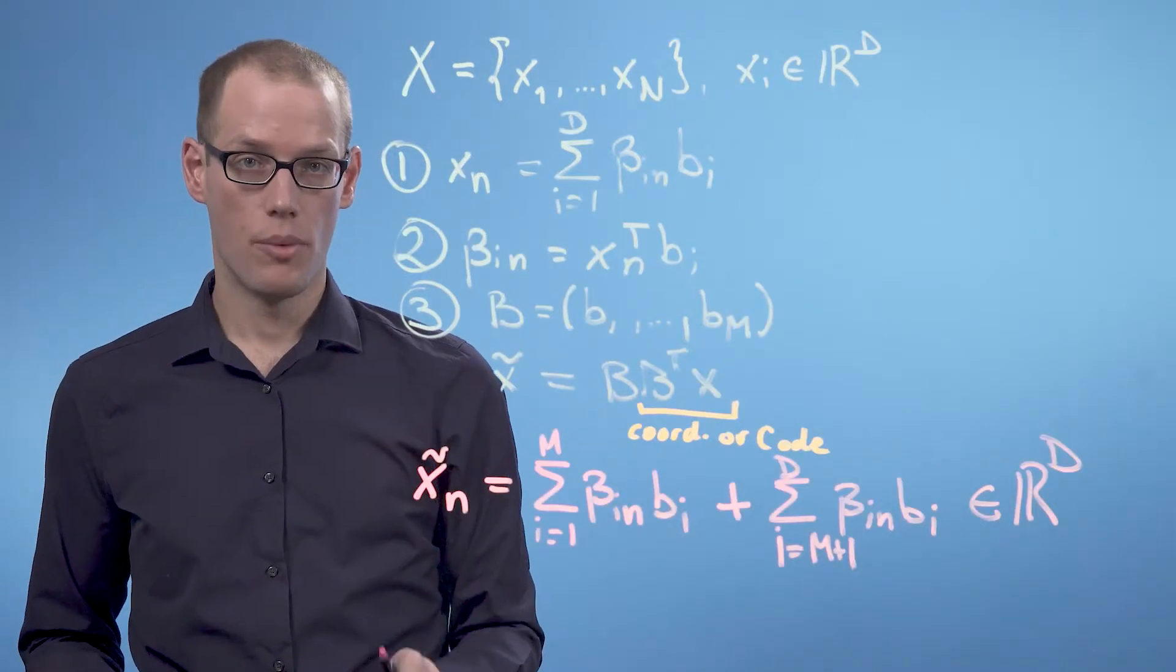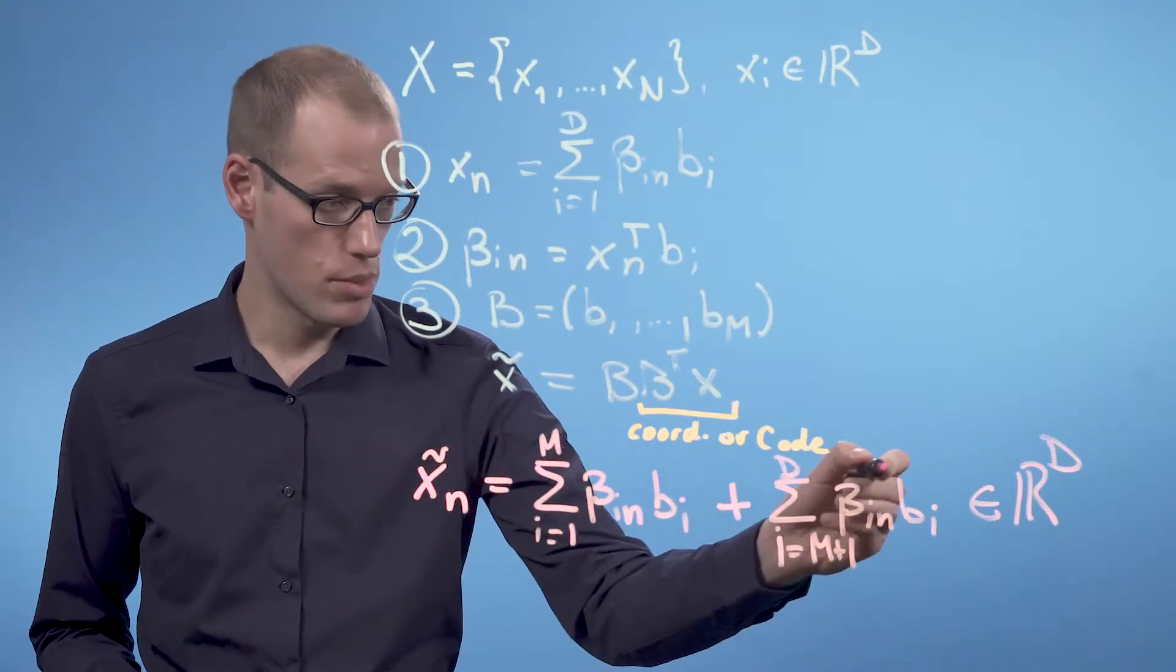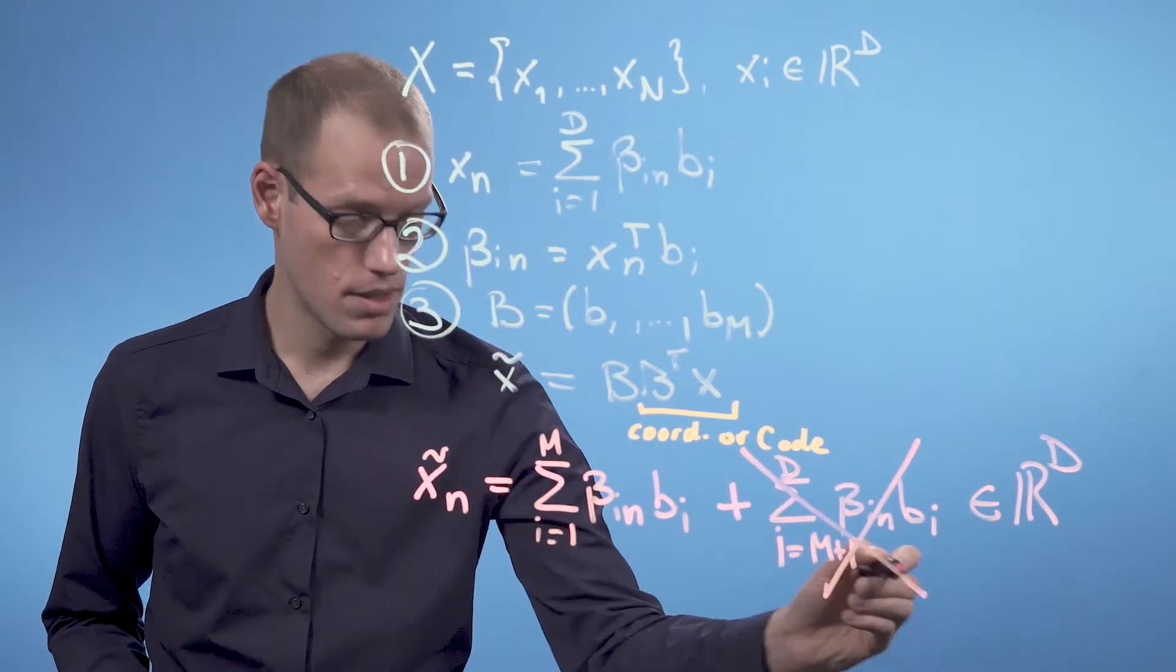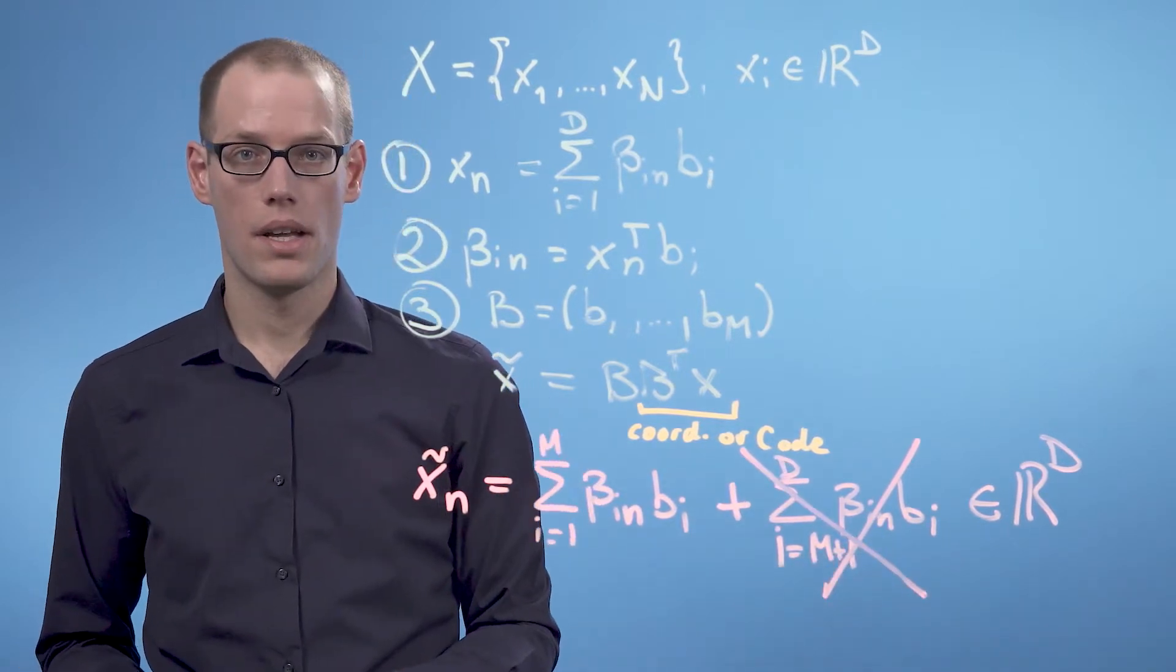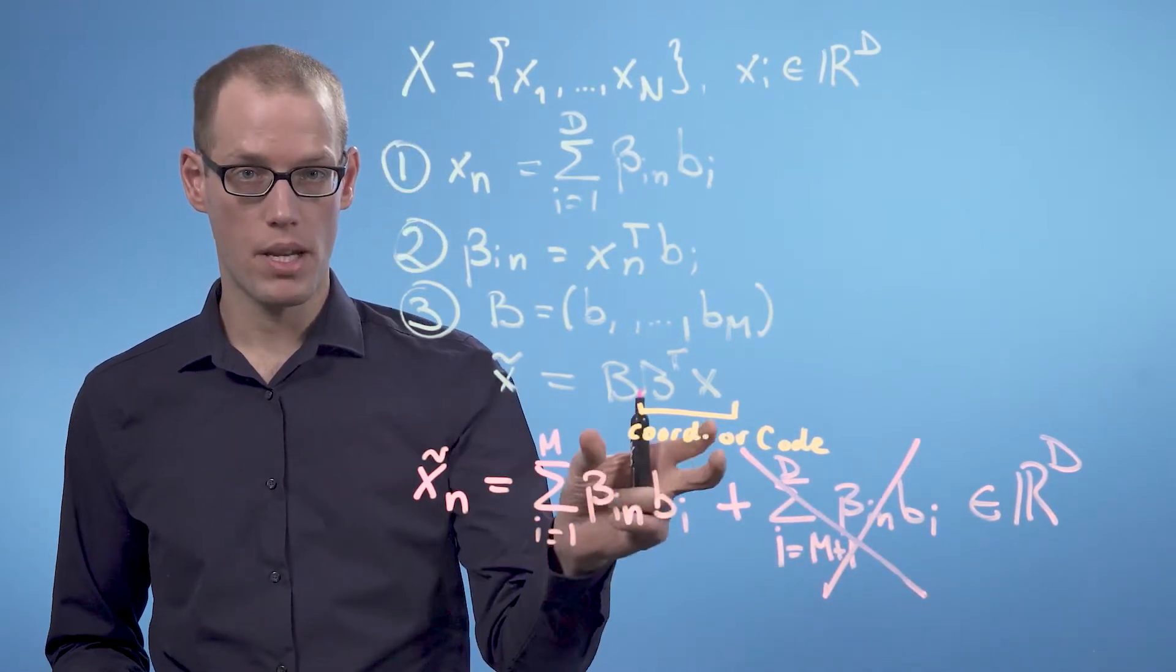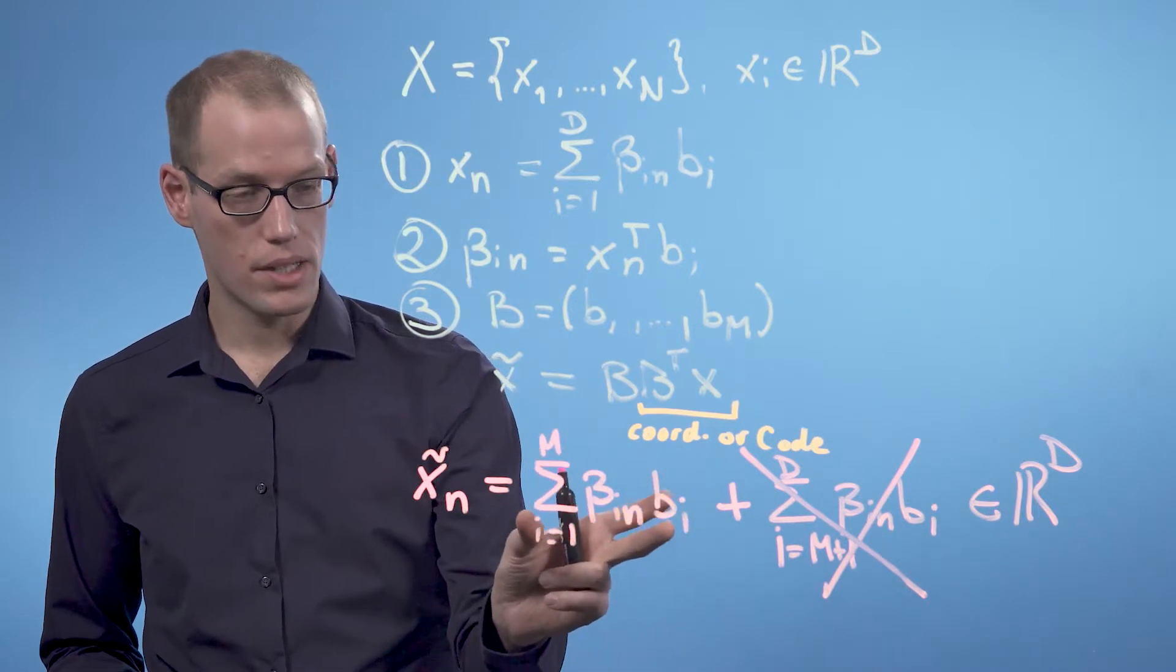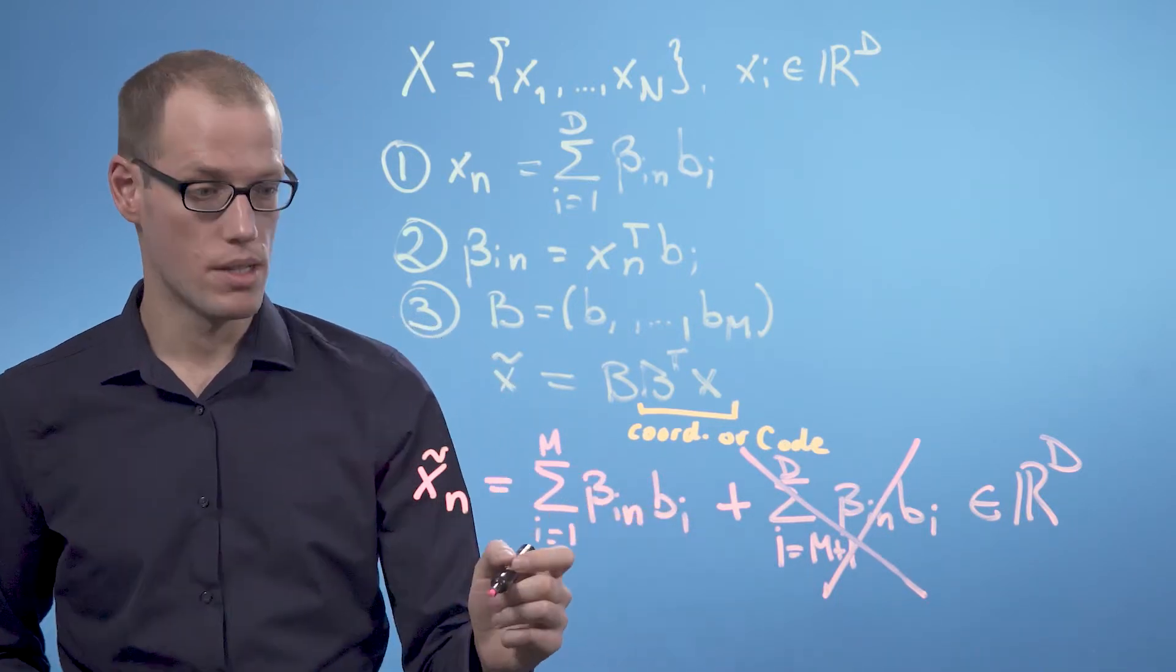In PCA, we ignore the second term. So we get rid of this part, and then we call the subspace that is spanned by the basis vectors b_1 to b_m the principal subspace.